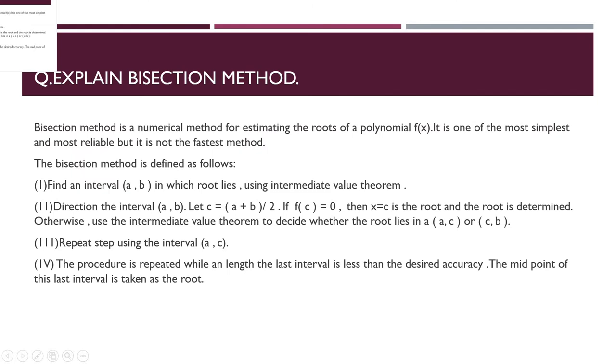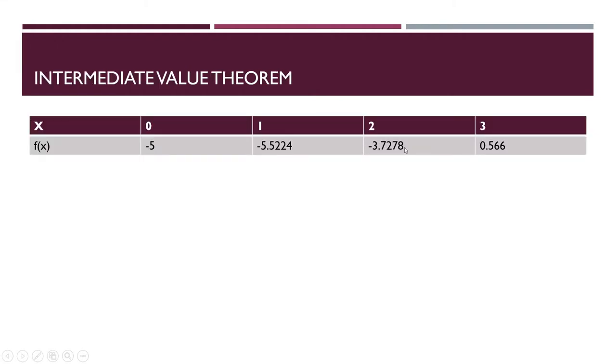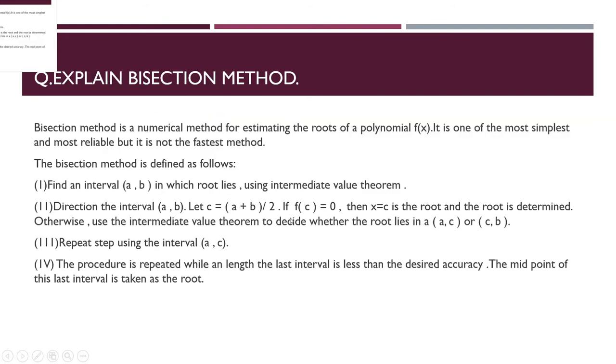Let c equal a plus b divided by 2. Add these two values and divide by 2, so you get the value of c. If fc equals 0, then x equals c is the root and the root is determined. Otherwise use the intermediate value theorem: if fc is not equal to 0, decide whether the root lies between a, c or c, b. Repeat the step using the new interval. The procedure is repeated until the length of the last interval is less than the desired accuracy.